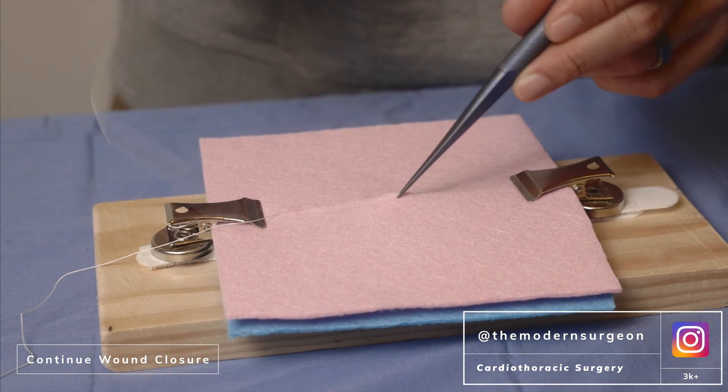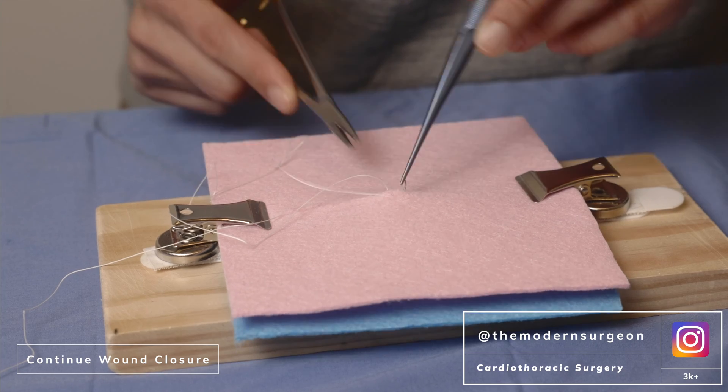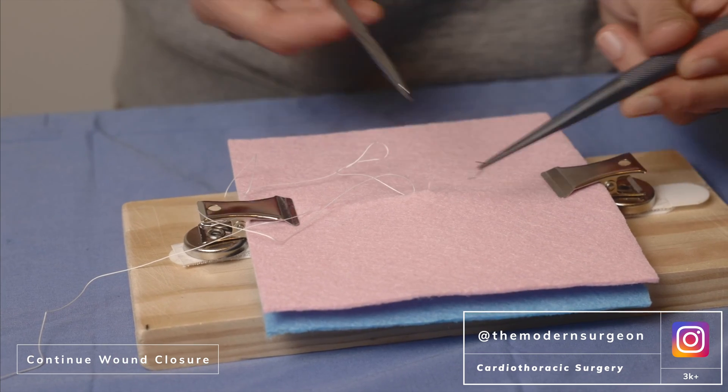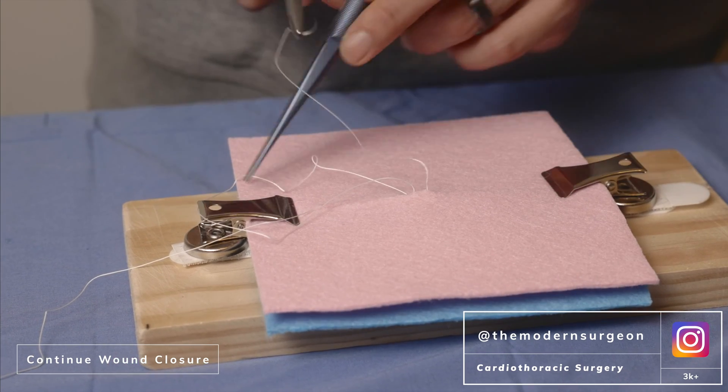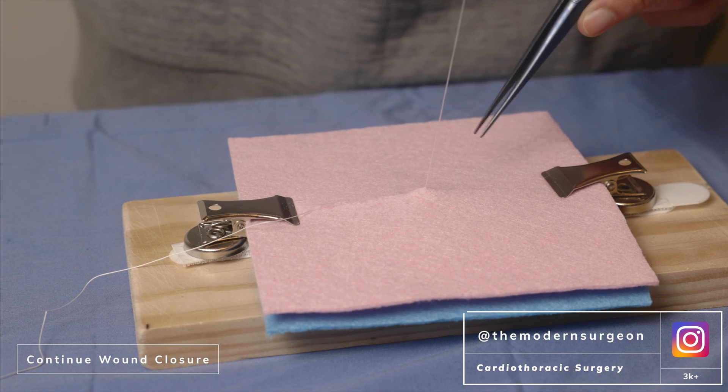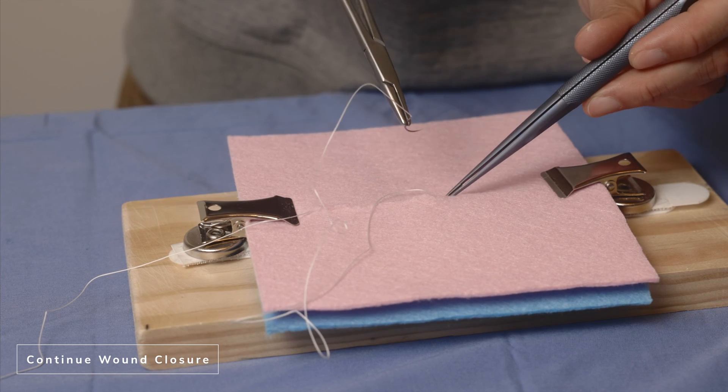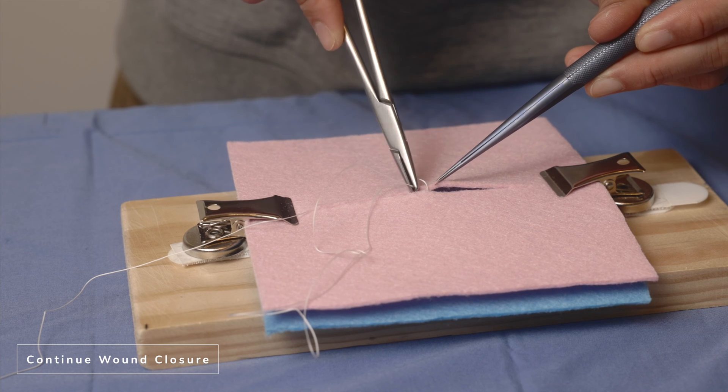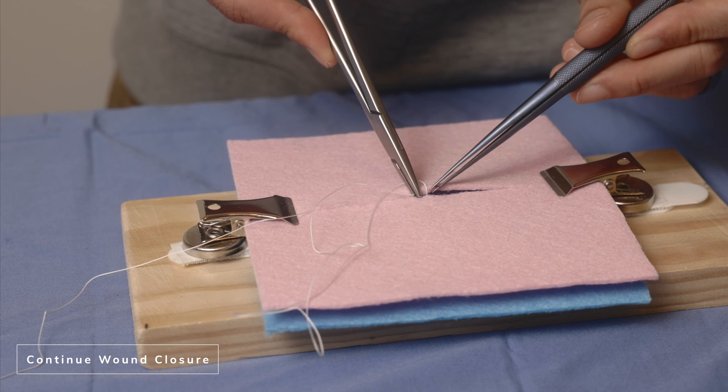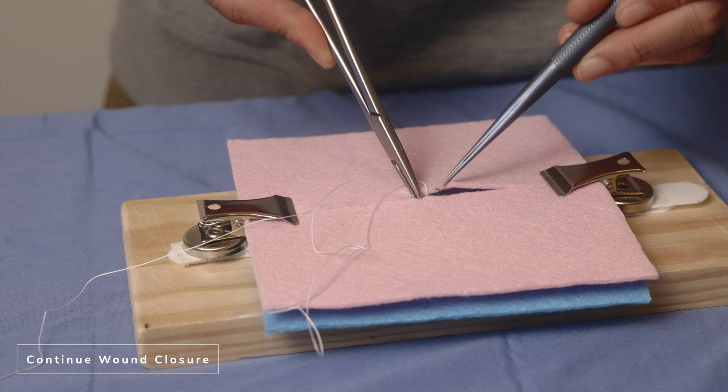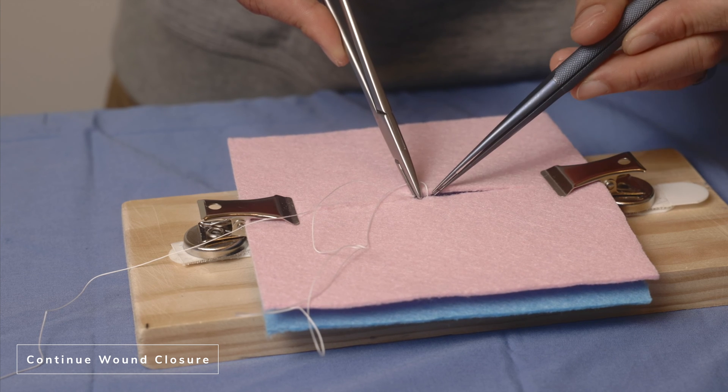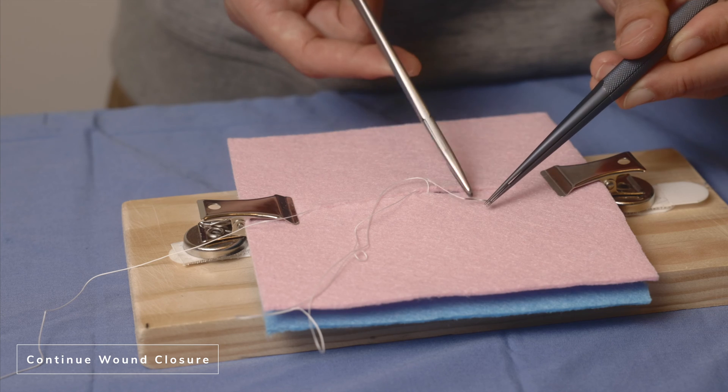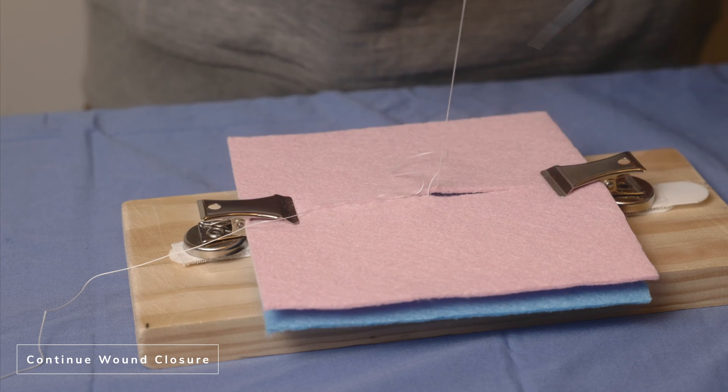So I'm going to take a couple more bites. Notice again how I use my left hand. It exposes the skin where you want to be exiting with the needle. So I enter here, which is across where I exited on the other side. And then the forceps were holding the skin close to where the needle was going to exit. So I showed myself a clear trajectory for the needle.